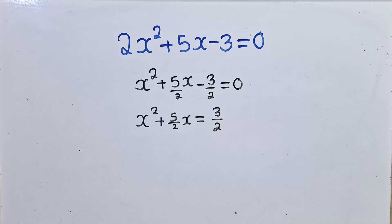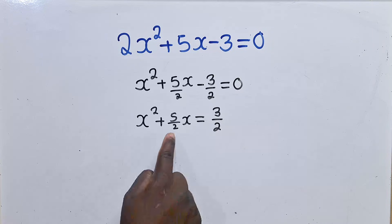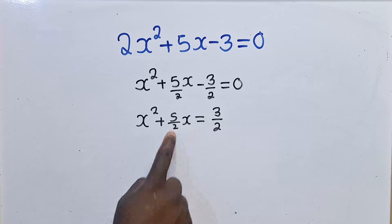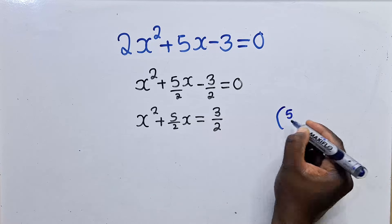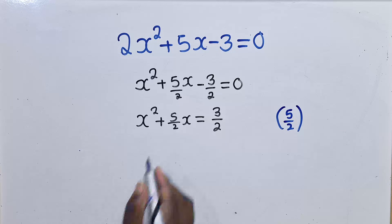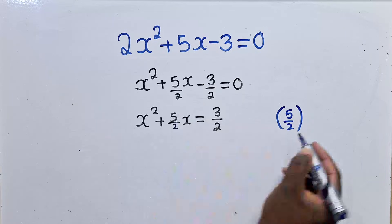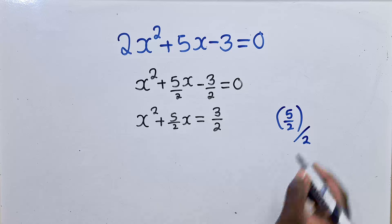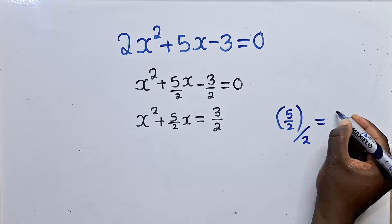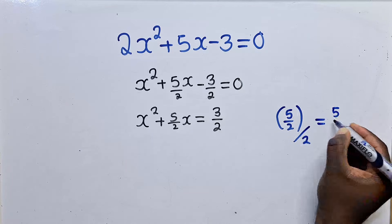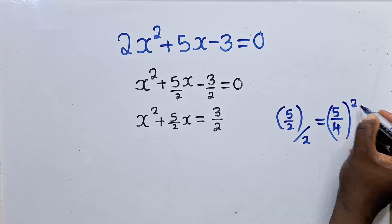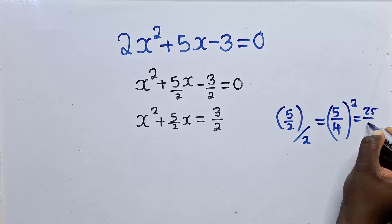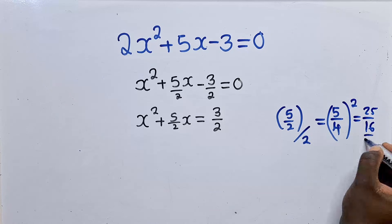Now from here, we get whatever term is the b-term — the coefficient here is 5/2. When we get this number, we divide by two always, which comes out to be equal to 5/4. Now this 5/4 you square it, and it will give you 25/16. So we need this.